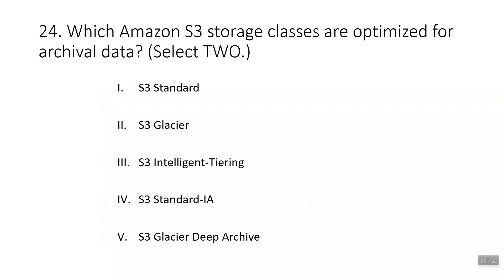Question twenty-four: which Amazon S3 storage classes are optimized for archival data? Select two. The correct options are S3 Glacier and S3 Glacier Deep Archive, the most appropriate classes for long-term archival. S3 Standard is ideal for frequently accessed data. S3 Intelligent-Tiering is not for archival. S3 Standard-IA is ideal for infrequently accessed data that requires high availability when needed.